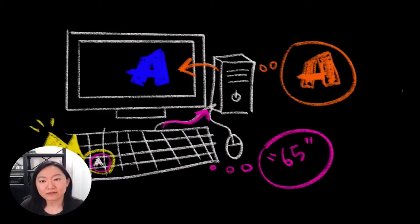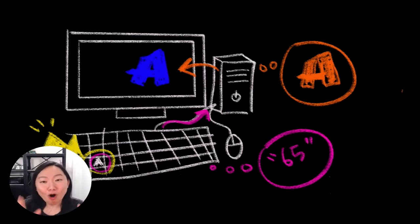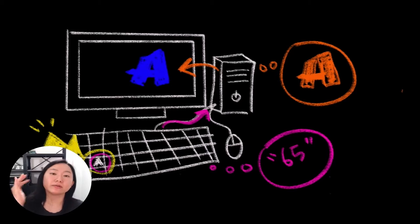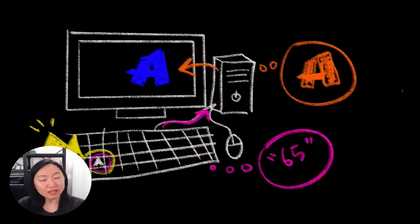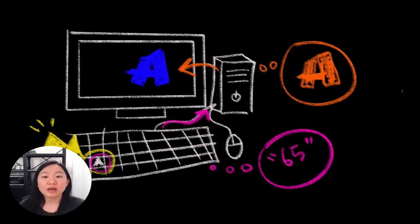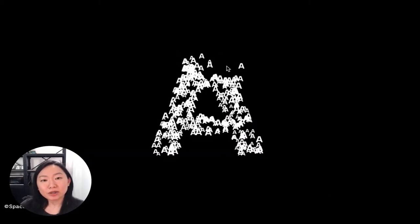All of this is happening instantaneously for us on the computer. We type something, a signal is generated for a specific Unicode point, the computer retrieves these data points, and within those data points there's a certain order — a first point, second point, third point, and so forth. All of these data points are something that we can use for generative typography.